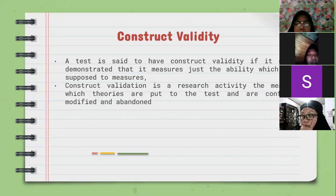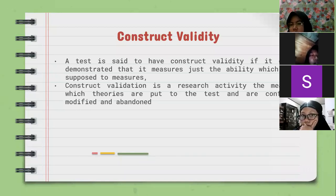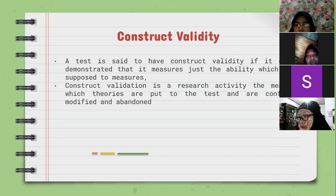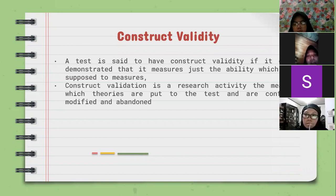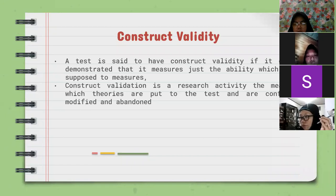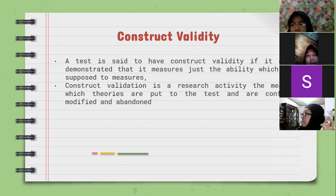The third one is construct validity. Construct validity is the concept or theory underlying the usage of a certain ability, including language ability. A test is said to have construct validity if it can be demonstrated that it measures just the ability it is supposed to measure. A construct validation is a research activity by which theories are put to the test and are confirmed, modified, or abandoned. For example, if we want to test the student's ability in reading, the test we give should measure the student's ability in reading.